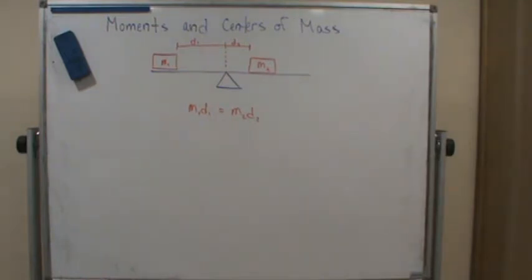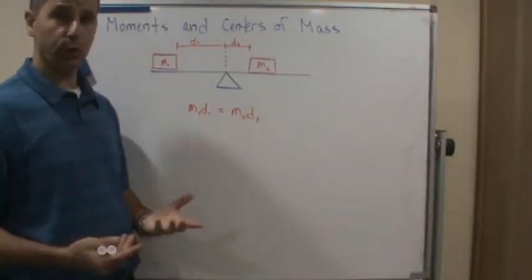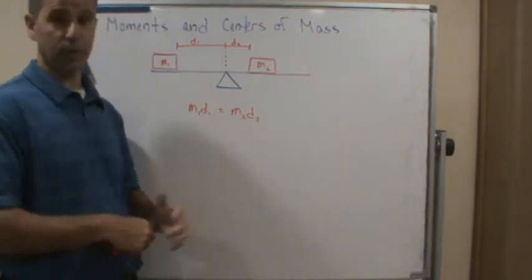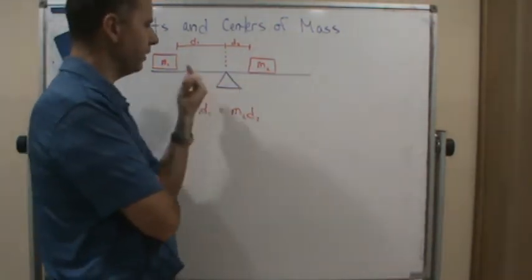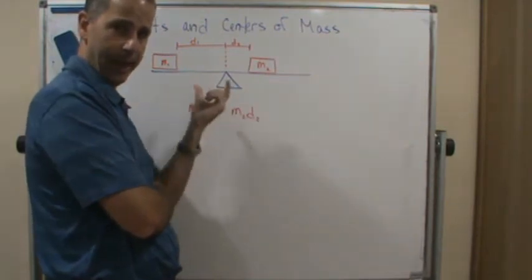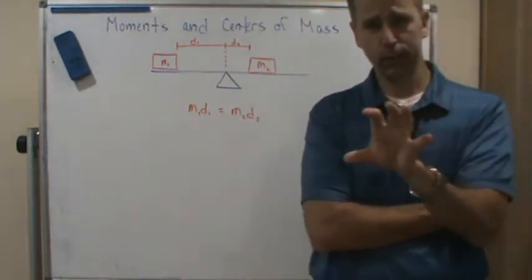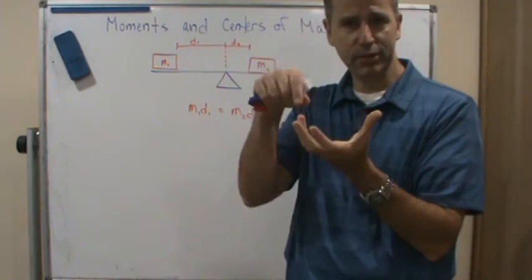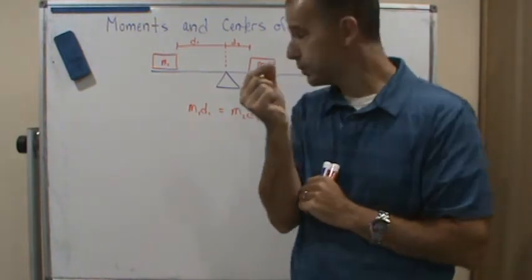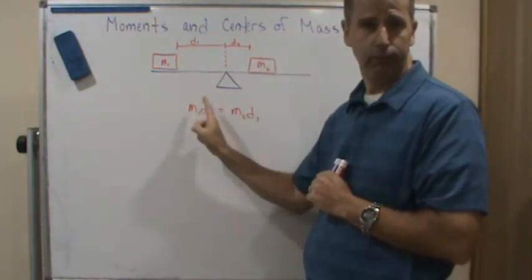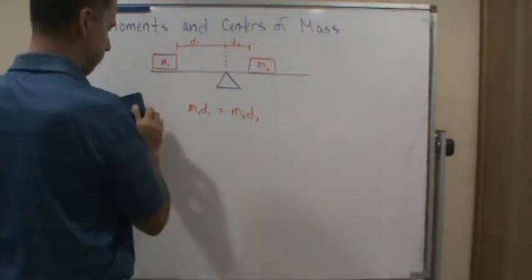This is true if and only if we have a balancing point. In this example we moved the masses to find balance, but in most problems the masses are fixed. So instead we're interested in finding the balancing point by moving the fulcrum. Let's set this up differently.